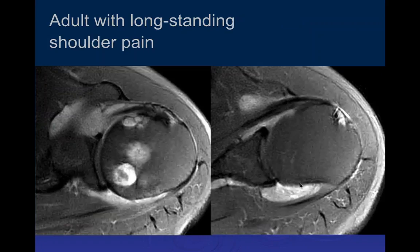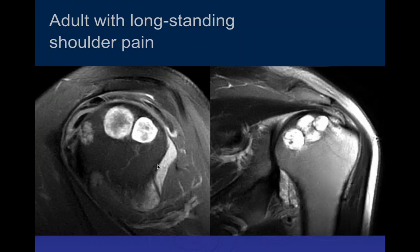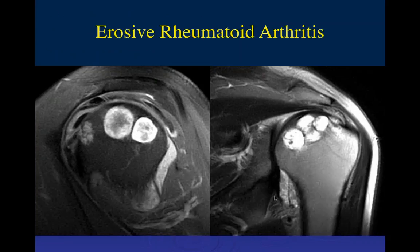In another adult with long-standing shoulder pain, axial PD fat-sat images again show marked synovial thickening and cortical erosions of the humeral head — notably pronounced — again raising concern for inflammatory arthritis.